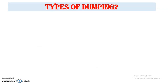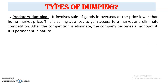Now let's see the types of dumping. The first type is predatory dumping. It involves the sale of goods overseas at a price lower than the home market — selling at a loss — just to gain access to a market and eliminate competition. After competitors are eliminated, the company becomes a monopolist in the foreign country with no remaining competitors. So predatory dumping is permanent in nature.